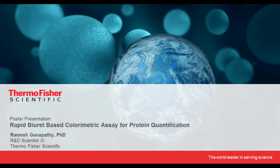The next is a two-part question: what absorbance range can be used to read the Rapid Gold BCA, and does it have to be read only at 480 nanometers? No. If your plate reader does not have the capability to read exactly at 480 nanometers, you can select a range. We have done a study and found that anything from 470 nanometers all the way up to 530 nanometers can be used with the Rapid Gold BCA.